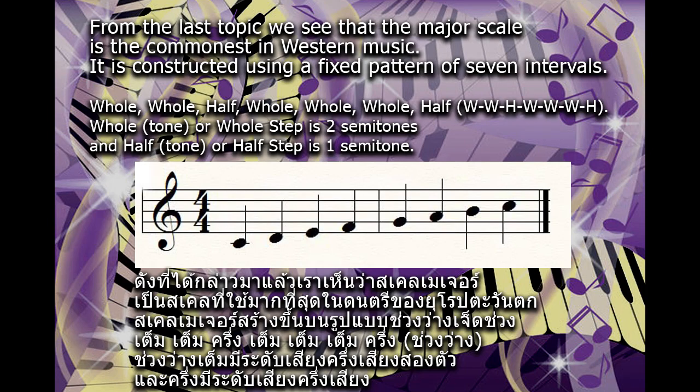From the last topic, we see that the major scale is the commonest in Western music. It is constructed using a fixed pattern of seven intervals: whole, whole, half, whole, whole, whole, half. A whole tone or whole step is two semi-tones, and a half tone or half step is one semi-tone.